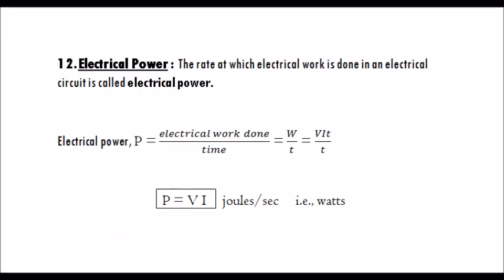Electrical power: the rate at which electrical work is done in an electrical circuit is called electrical power. The unit of power is Watt. Electrical power is P equals electrical work done divided by time, that is W over T, which equals V·I·T divided by T. Therefore, P equals V into I, in joules per second, that is watts.